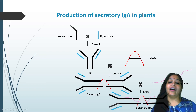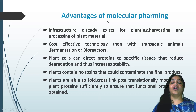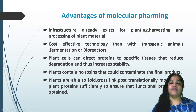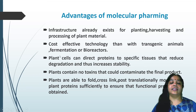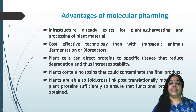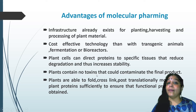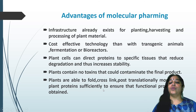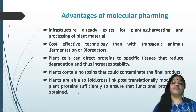Advantages of plant molecular farming: the infrastructure for planting, harvesting, and processing already exists; it is more cost-effective than transgenic animals, fermentation, or bioreactors; plant cells can direct proteins to specific tissues, reducing degradation and increasing stability; plants contain no toxins that could contaminate the final product; and plants are able to fold, cross-link, and post-translationally modify non-plant proteins sufficiently to ensure functional proteins are obtained.